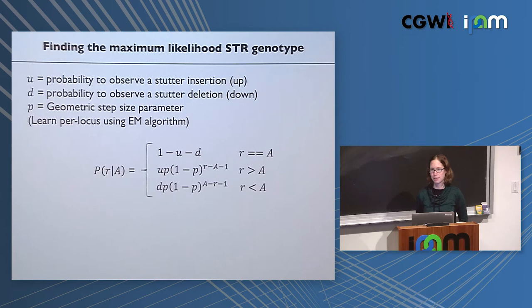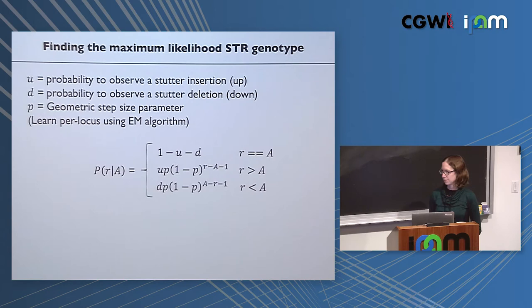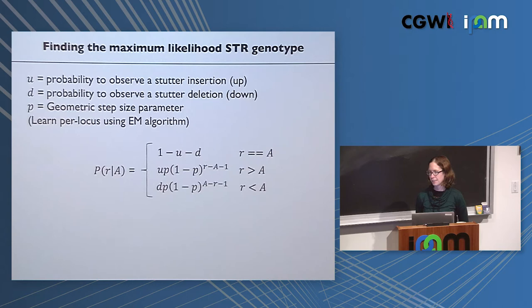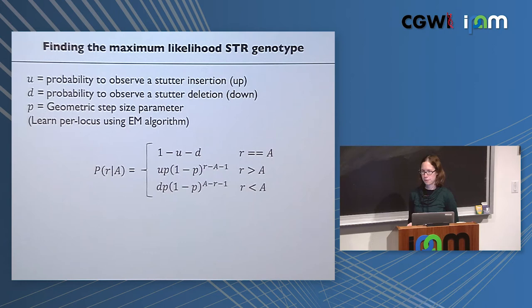Other factors correlated with stutter include recombination, GC content, and the motif sequence, but those are minor compared to repeat length. We estimate stutter jointly across individuals — given enough samples, say 50, we estimate this from the data itself at a given locus. These parameters vary hugely based on whether data is PCR-free: for PCR-free data, the probability of seeing stutter is around one or two percent, whereas without PCR-free protocol it can be ten to fifteen percent — an order of magnitude difference.